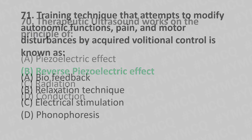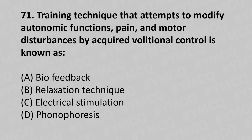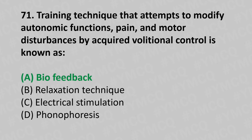Moving to our 71st question. A training technique that attempts to modify the autonomic functions, pain and motor disturbance by acquired volitional control is known as: Option A, Biofeedback; Option B, Relaxation technique; Option C, Electrical stimulation; Option D, Phonophoresis. And the answer is Option A, Biofeedback.